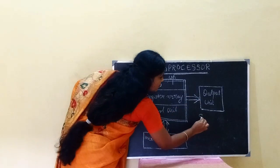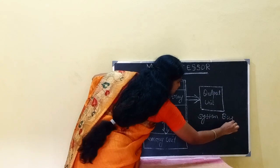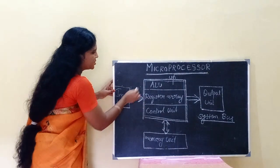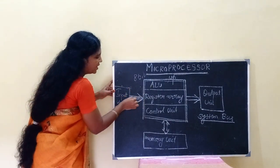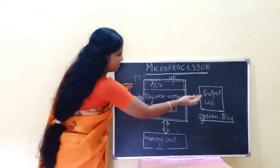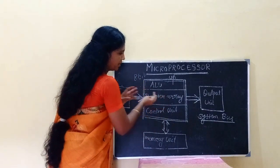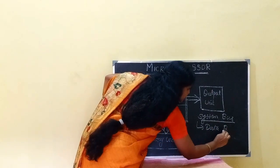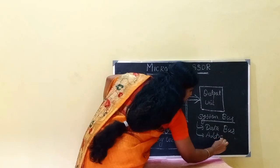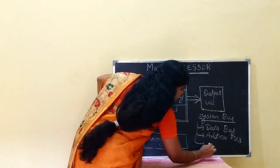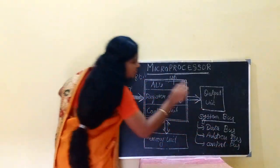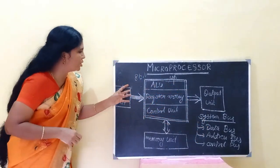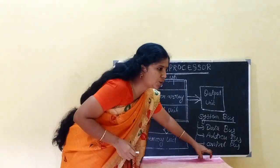System Bus — the system bus connects components. There are 3 types of bus. Elliptical lines allow data to flow through the microprocessor. Data is transferred via peripheral units along the bus. The 3 types of bus are: Data Bus, Address Bus, and Control Bus.